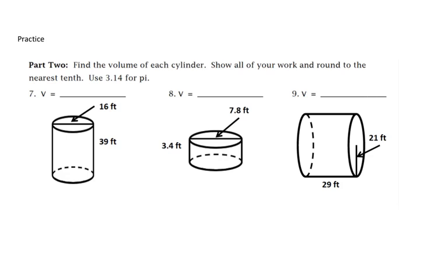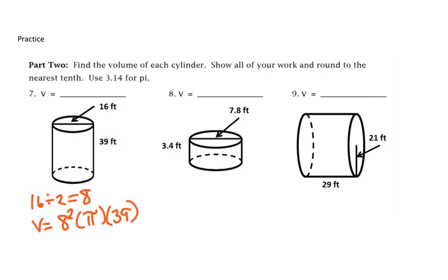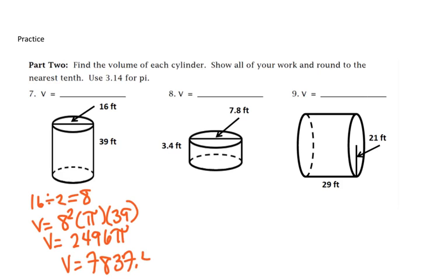Welcome back, you guys. We'll start by taking our diameter and dividing it by 2. So 16 divided by 2, which is 8. So our volume is 8 squared times pi — which we're using 3.14 — times 39. We put that in our calculator, we'll get our volume is 2,496 pi, which when we simplify gives 7,837.4 feet cubed.